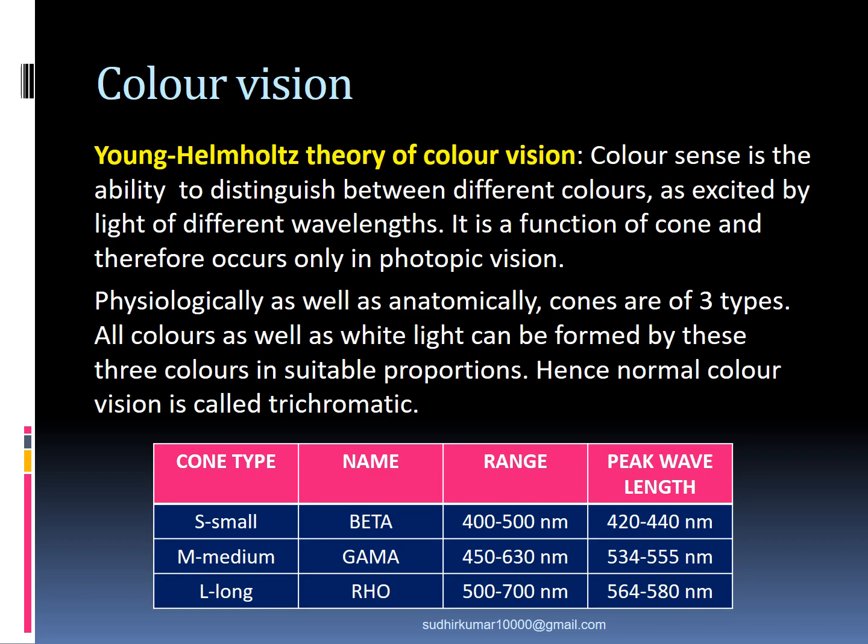The Young-Helmholtz theory of color vision suggests that color sense is the ability to distinguish between colors as excited by light of different wavelengths. It is a function of cones and therefore occurs only in photopic vision. Physiologically as well as anatomically, cones are of three types. All colors as well as white light can be formed by these three colors in suitable proportions. Hence, normal color vision is called trichromatic.